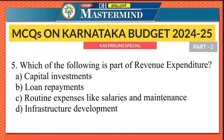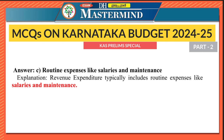The fifth question: Which of the following is part of revenue expenditure? Options are: capital investments, loan repayments, routine expenses like salaries and maintenance, or infrastructure development. Capital investments come under capital expenditure; loan repayments have already been seen; infrastructure development also comes under capital expenditure. So the right option is option C — routine expenses like salaries and maintenance.